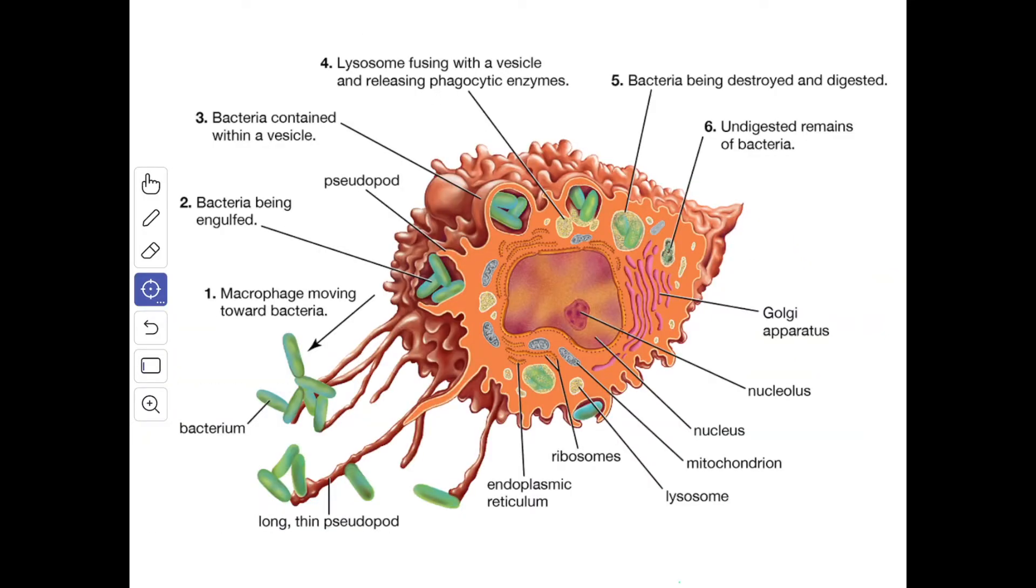Now we'll see the structure of the mononuclear phagocyte cells. All the cells of the mononuclear phagocyte system have similar features in common. They are large cells which are about 15 to 25 micrometers in diameter. The nucleus is euchromatic. Then you have the granular and agranular endoplasmic reticulum, the Golgi complex, and the mitochondria.